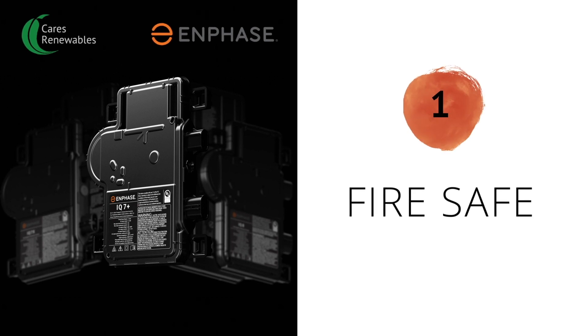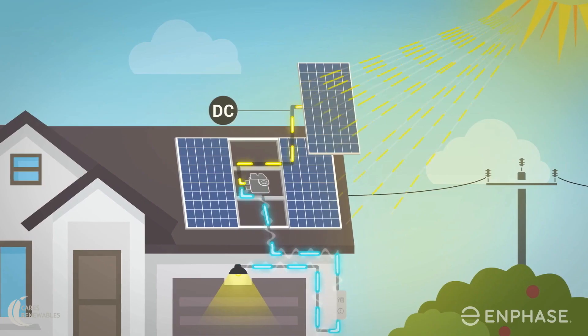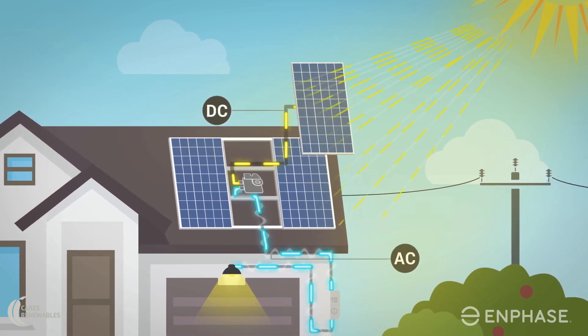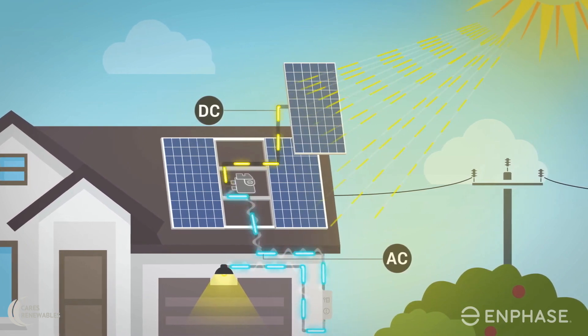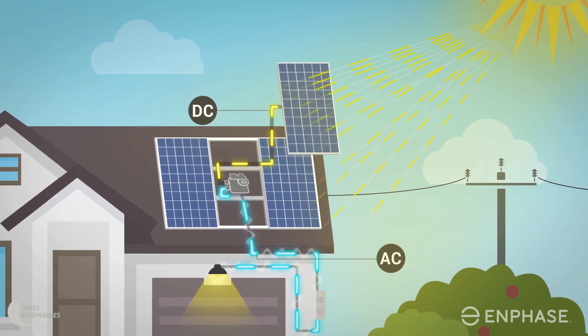We will start with safety. Enphase is fire-safe by design. Solar modules produce direct current or DC, which is converted into alternating current or AC by solar inverters. Our household appliances are powered by this safe AC power.